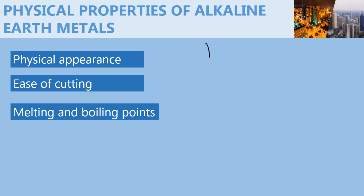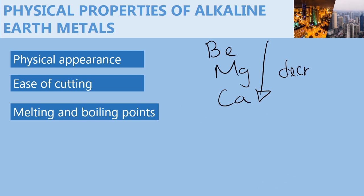As you move down the group from beryllium to magnesium, calcium, and the others, the melting and boiling points decrease. This is because metal atoms are held together by forces of attraction between the positive nucleus and the delocalized electrons. As you move down the group, there is an increase in the atomic radius, which leads to a decrease in the attraction between the nucleus and the delocalized electrons. This is why the melting and boiling points decrease down the group.